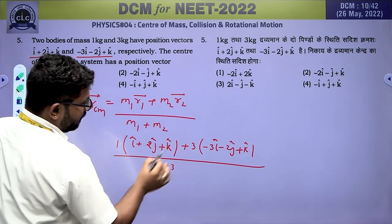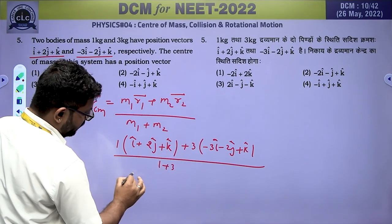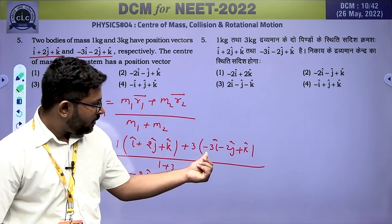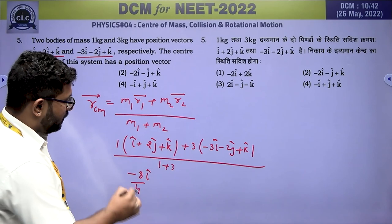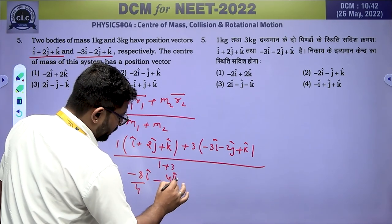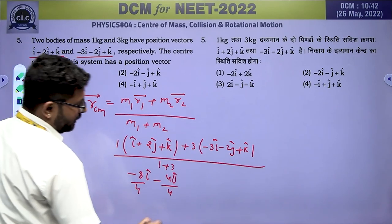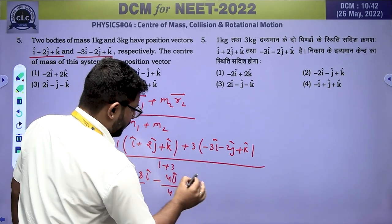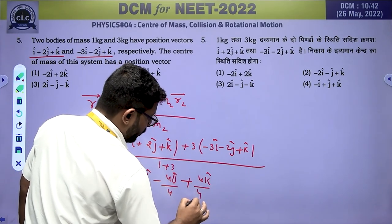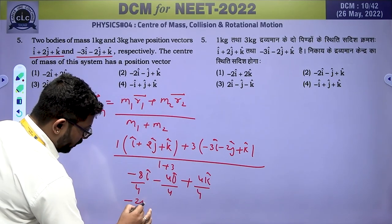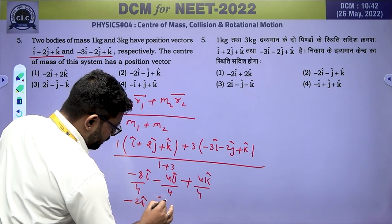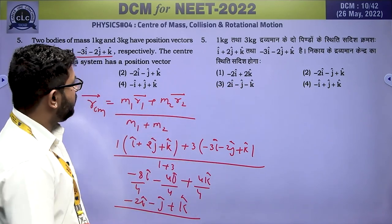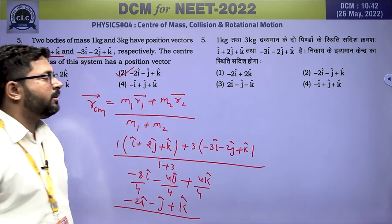Solving: î component: (1 − 9)/4 = −8/4 = −2î; ĵ component: (2 − 6)/4 = −4/4 = −ĵ; k̂ component: (1 + 3)/4 = 4/4 = k̂. So R_CM = −2î − ĵ + k̂. The correct answer is the second option.